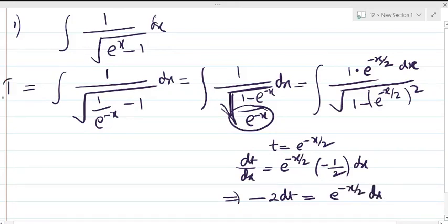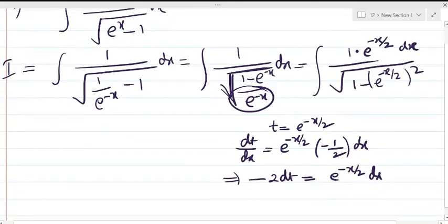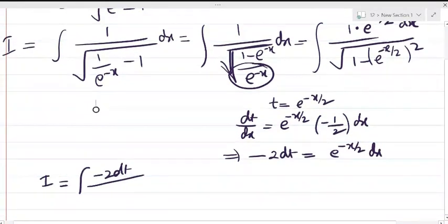Which we can write as minus 2 dt is equal to e to the power minus x by 2 dx. Therefore, let the integral be I. Therefore, the integral I is equal to minus 2 dt upon under root of 1 minus t square.